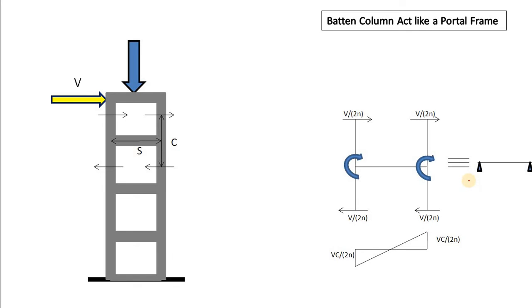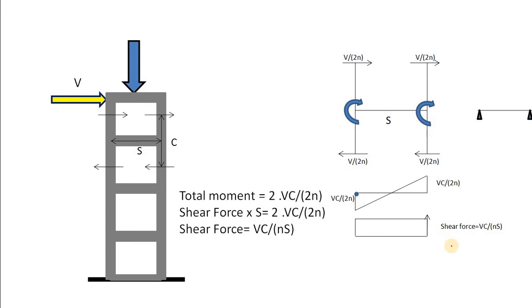Now the system looks like a portal frame system. We can simplify this into a beam with hinges at both sides. This couple produces a clockwise moment, and this couple also produces a clockwise moment with the same magnitude. Both these moments act at the ends of your batten, so if we draw the bending moment diagram, it looks like this.